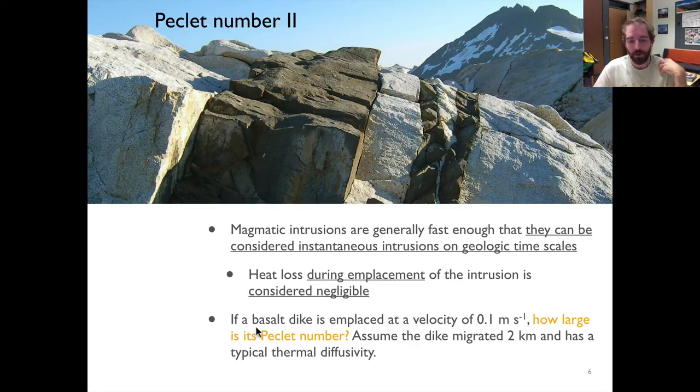The way you can do that is we'll make a simple example here where we're going to assume a basalt dike is emplaced and it's emplaced at a velocity of 0.1 meters per second. So the question for you then is how big is its Peclet number? We'll assume that it's migrated two kilometers and it has a typical thermal diffusivity.